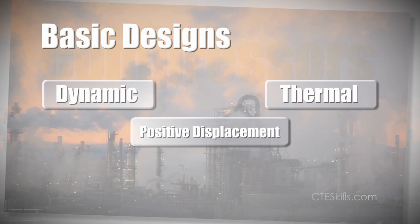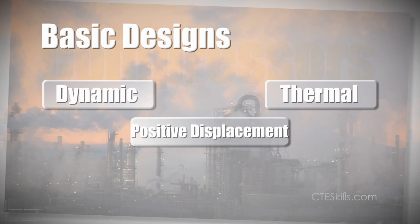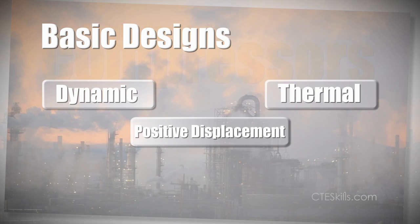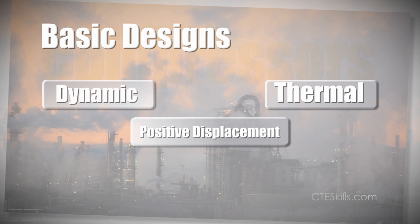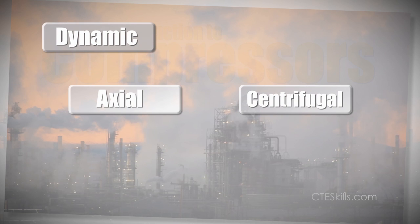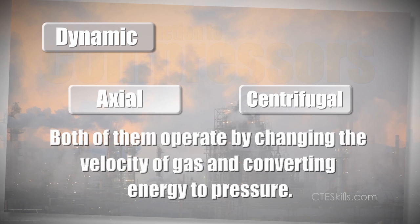There are three basic designs used in compressors: dynamic, positive displacement, and thermal. Axial and centrifugal are the two types of dynamic compressors. Both of them operate by changing the velocity of a gas and converting energy to pressure.